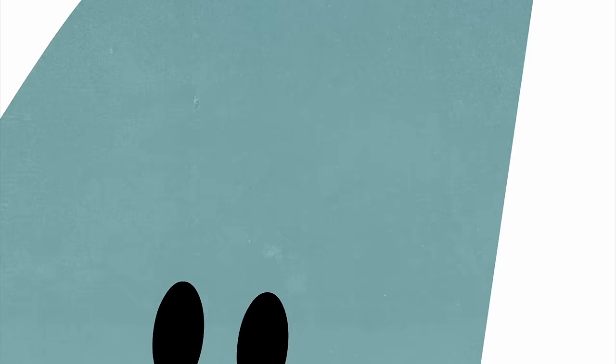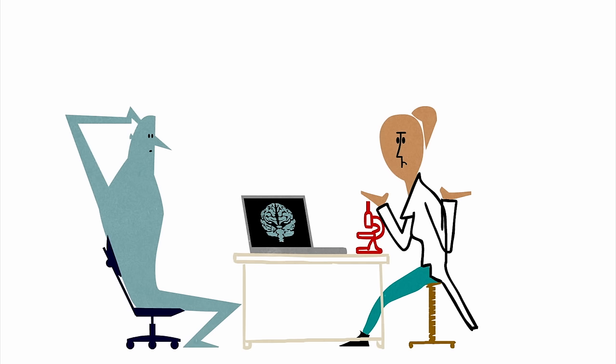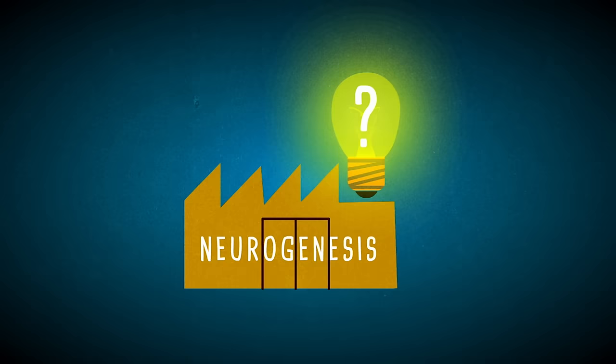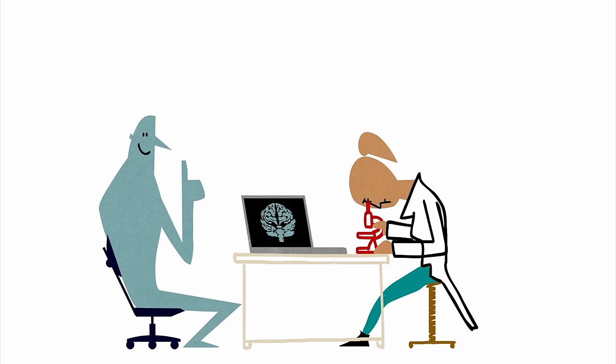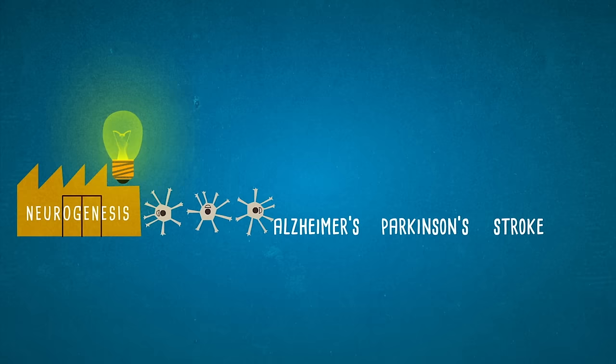Scientists don't yet have a good grasp on exactly what role neurogenesis plays in any of these regions, or why they have this ability that's absent from the rest of the brain. But the mere presence of a mechanism to grow new neurons in the adult brain opens up an amazing possibility.